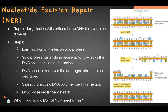Nucleotide excision repair, or NER, repairs large lesions or distortions in the DNA — for example, pyrimidine dimers. These bulky lesions restrict transcription and replication. The first step is identifying the lesion via a protein with endonuclease activity that nicks the DNA on either side of the lesion, usually about 10 to 12 base pairs away.